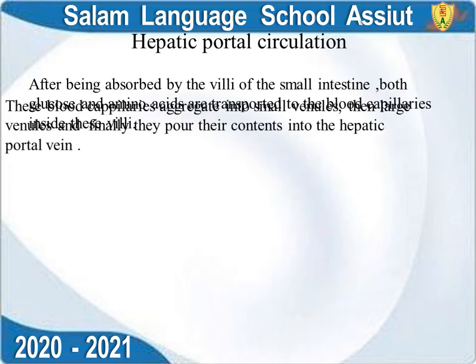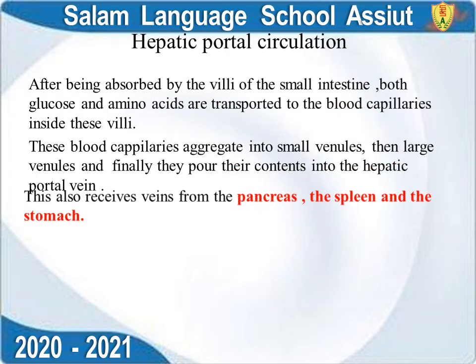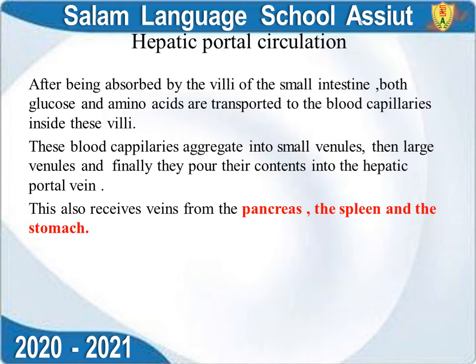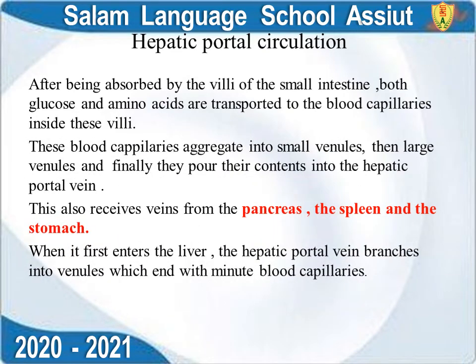In hepatic portal circulation, blood capillaries become small venules, which become larger veins, and finally form the hepatic portal vein. The hepatic portal vein also collects blood from the pancreas, spleen, and stomach, and carries it to the liver.